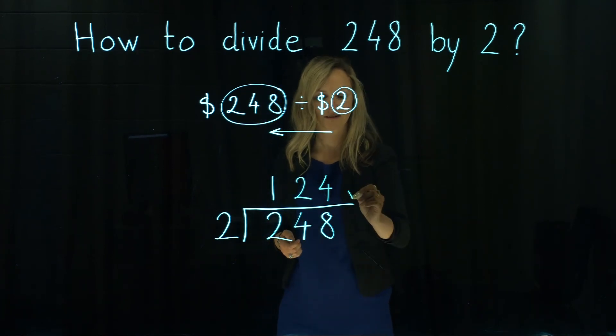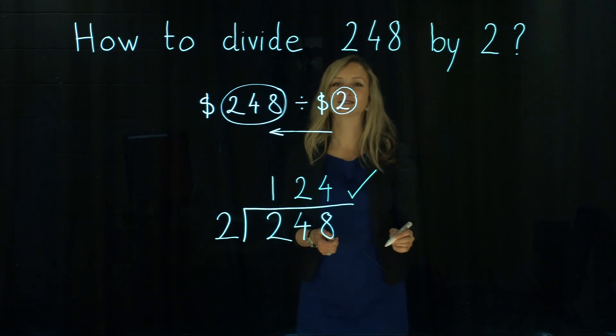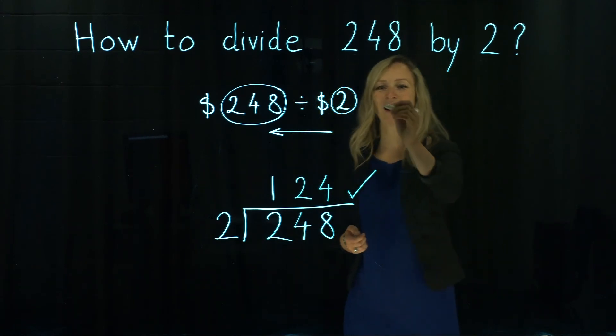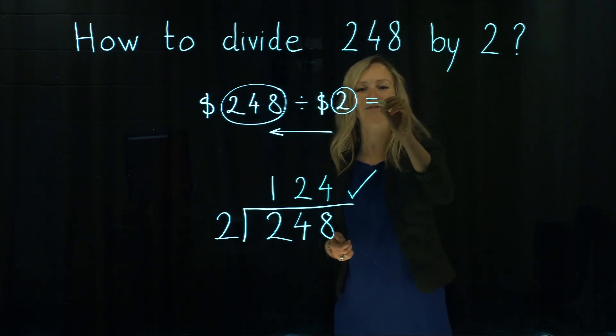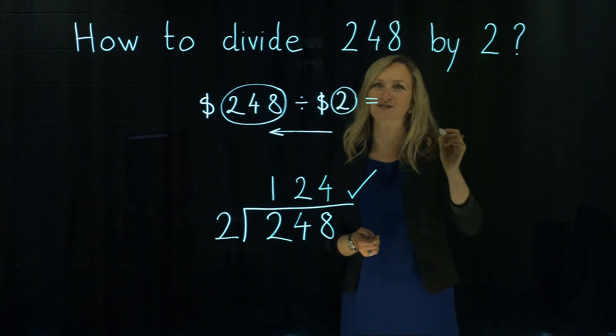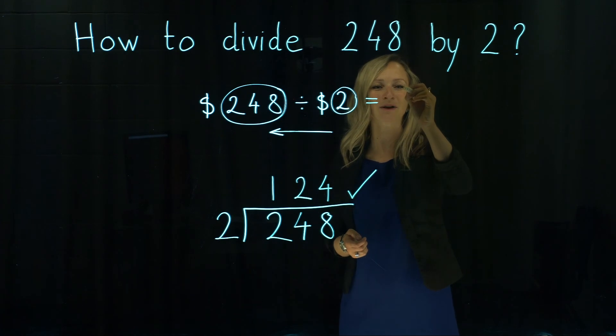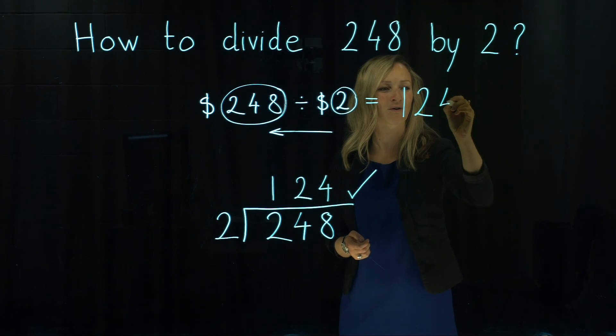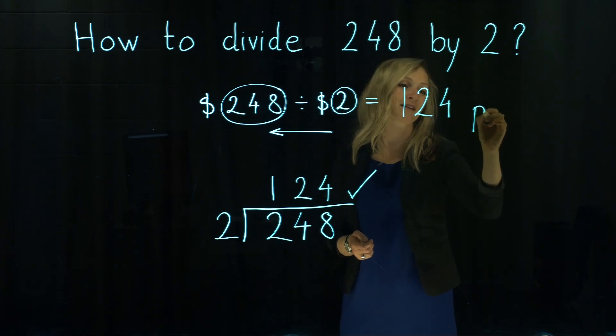And do you know what? We have the answer. So how many pins we can actually buy if price for each pin is $2 and our budget is $248. We can buy 124 pins.